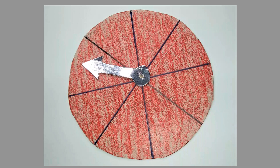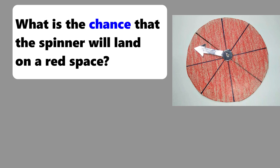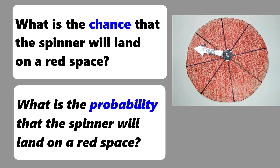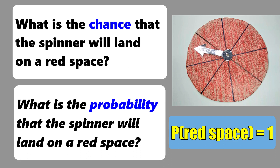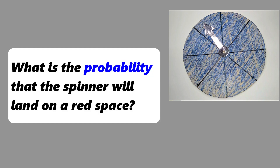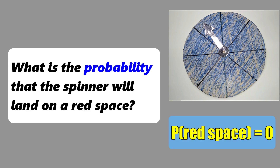Remember our previous discussion about a spinner? The question goes like this: what is the probability that the spinner will land on a red space? The entire space is red, so it is certain the spinner will land on a red space — the probability is equal to 1. Now with the same question: what is the probability that the spinner will land on a red space? In this case, there is no red space — it is impossible to happen, so the probability is zero.